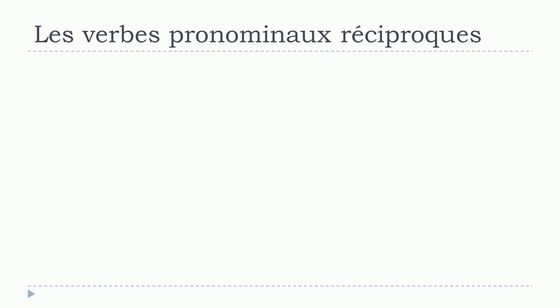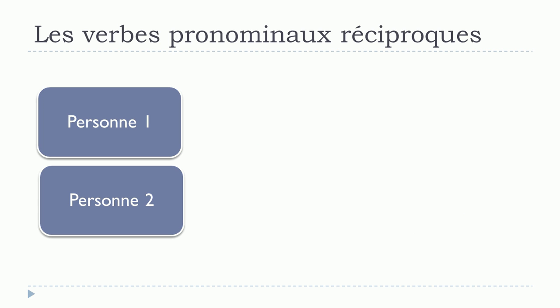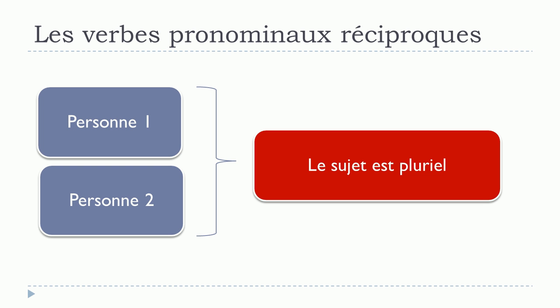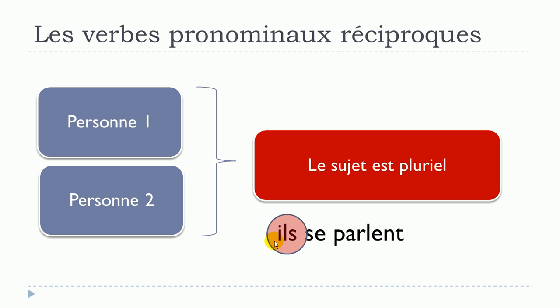Since we have two persons — la personne numéro 1 et la personne numéro 2 — it means that le sujet est au pluriel. So the subject will need to be in the plural form. Like here with ils se parlent: the subject is ils, which is the plural form.